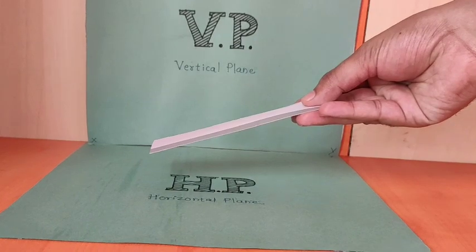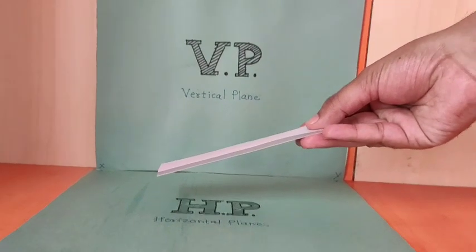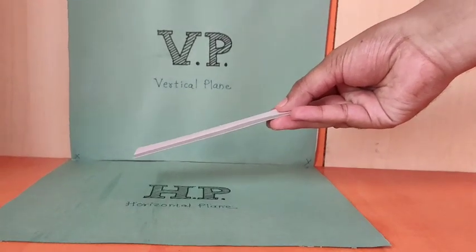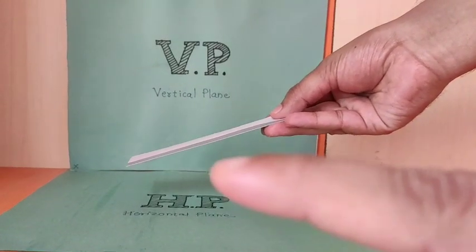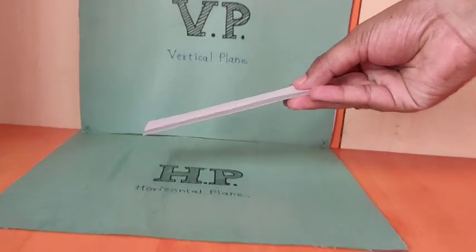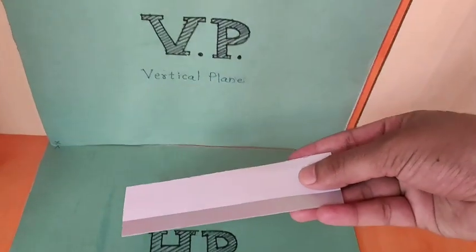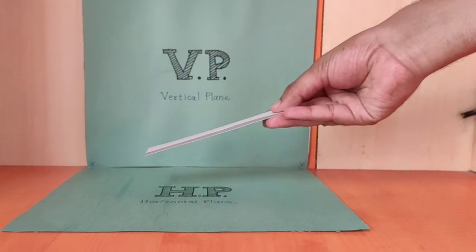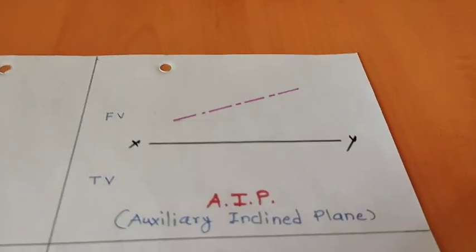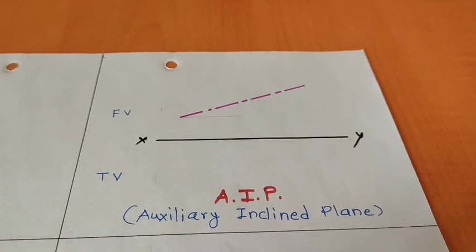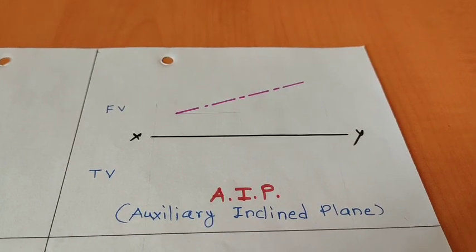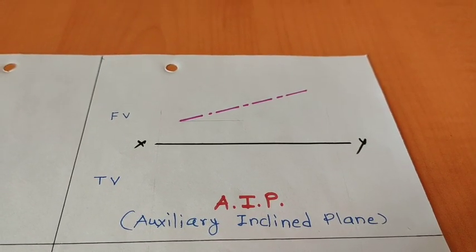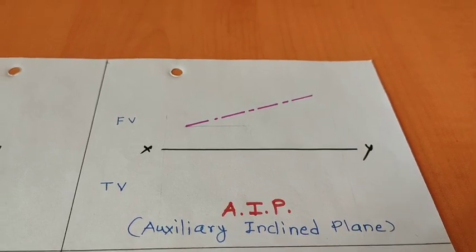The next plane is inclined to the horizontal plane while it is perpendicular to VP. Such a plane is called an auxiliary inclined plane. This is represented as an inclined plane in the front view. This plane is called AIP, that is auxiliary inclined plane.